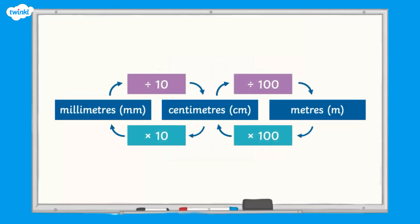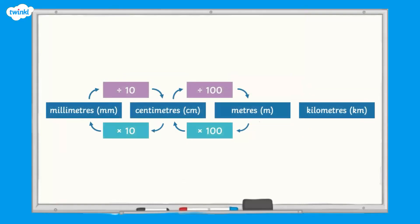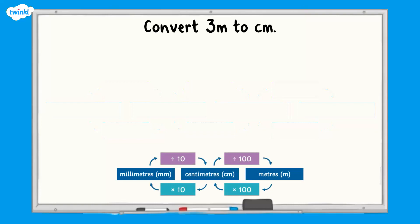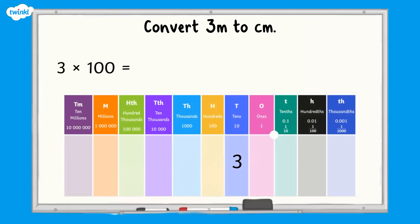To convert centimetres to metres, we divide by 100 because there are 100 centimetres in one metre. To convert metres to centimetres, we multiply by 100. To convert metres to kilometres, we divide by 1000. To convert kilometres to metres, we multiply by 1000. For example, converting 3 metres to centimetres: multiply by 100 to give 300 centimetres. Remember, when we multiply by 100 we move our digits two place value columns to the left.